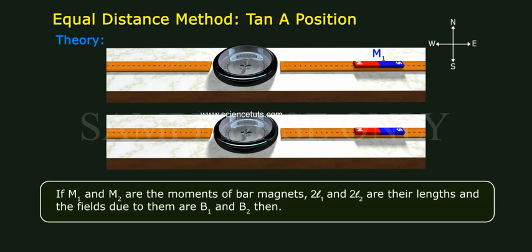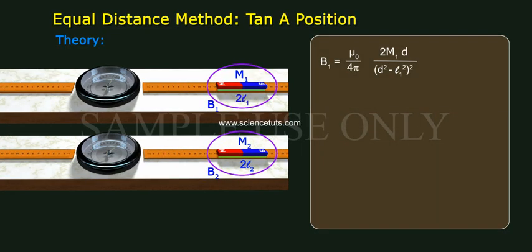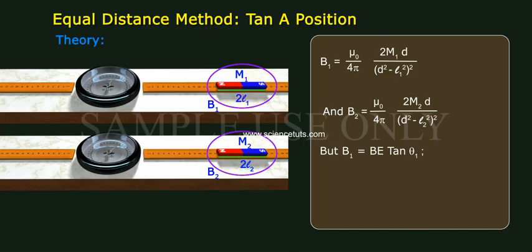If M1 and M2 are the moments of bar magnets, 2L1 and 2L2 are their lengths, and the fields due to them are B1 and B2, then B1 equals (mu0 / 4pi) × (2 M1 d) / (d² − L1²)² and B2 equals (mu0 / 4pi) × (2 M2 d) / (d² − L2²)².